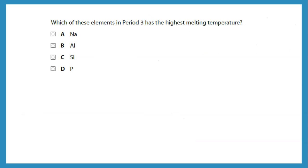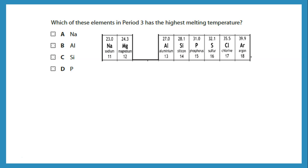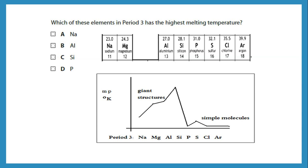Which of these elements in period 3 has the highest melting temperature? We're looking at sodium, aluminium, silicon, and phosphorus. The one in group 4 — silicon — is the one that has the highest melting point. If we say why, it's because silicon has a giant covalent structure with many strong covalent bonds that need a lot of energy to be broken.